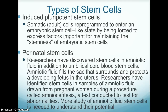Perinatal stem cells are stem cells that researchers have discovered in amniotic fluid, in addition to umbilical cord blood stem cells. Amniotic fluid fills the sac that surrounds and protects a developing fetus in the uterus. Researchers have identified stem cells in samples of amniotic fluid drawn from pregnant women during amniocentesis, which is a test conducted to test for abnormalities.